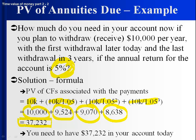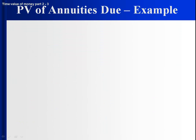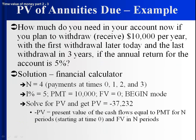We recognize that in this case this is an annuity due, because there are four payments. They start today and they're every year.